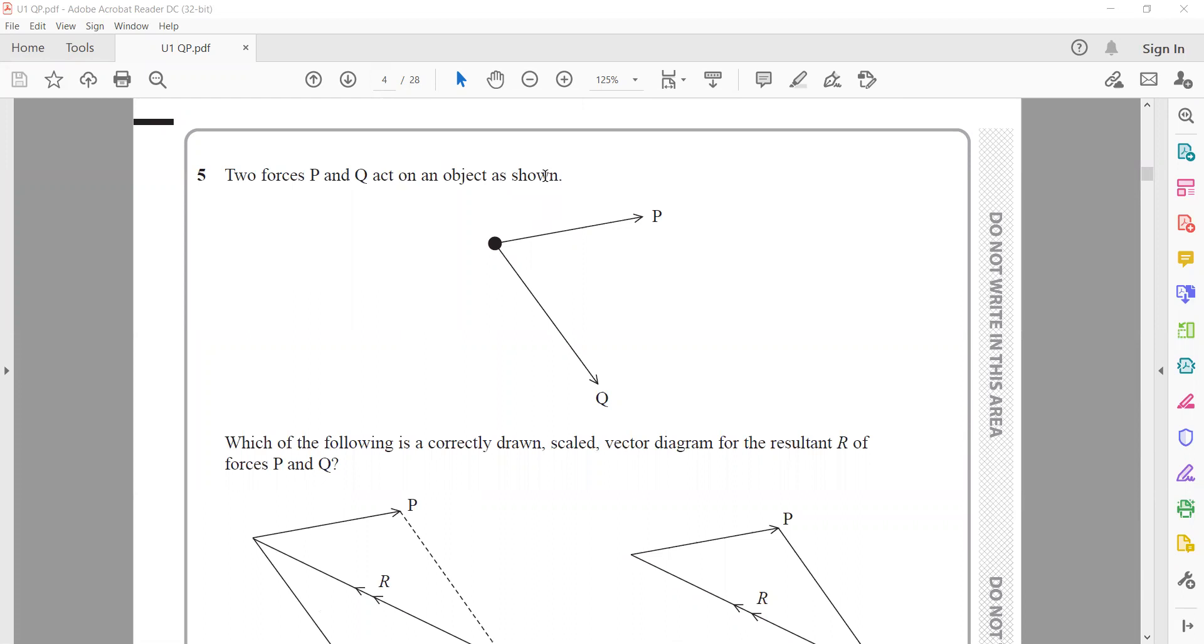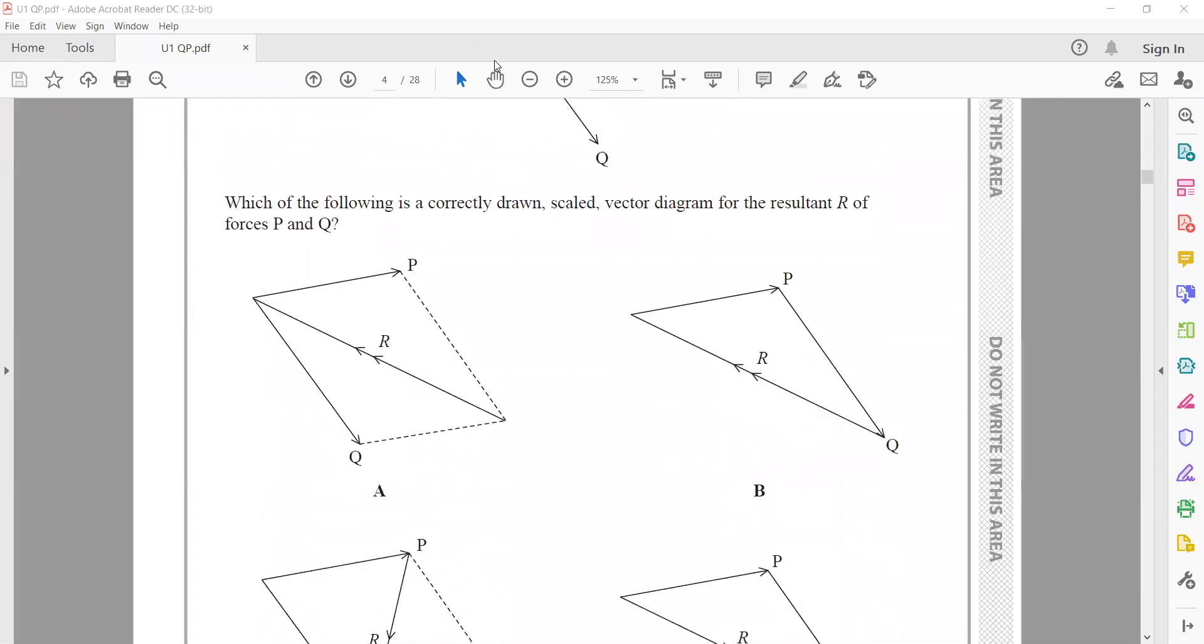Two forces P and Q act on an object. We can use the parallelogram method - consider the two vectors as sides of a parallelogram and the diagonal will be the resultant. Or using triangle method, draw vector P then vector Q, and from tail of the first to head of the last is the resultant vector R. We check which option matches.